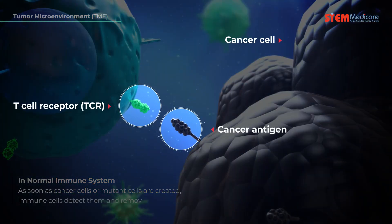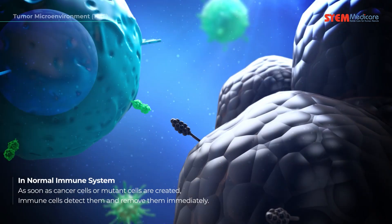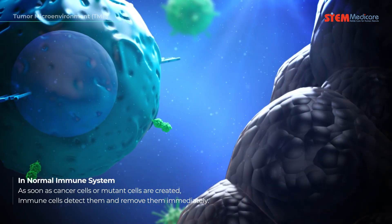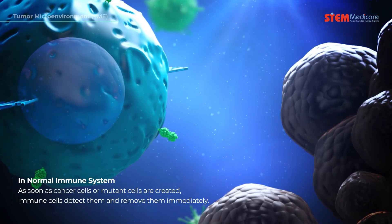In normal immune systems, as soon as cancer cells or mutant cells are created, immune cells detect them and remove them immediately.